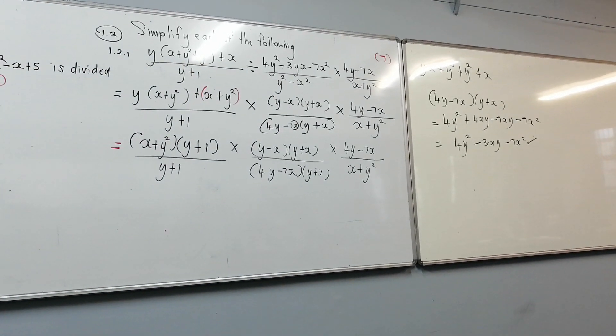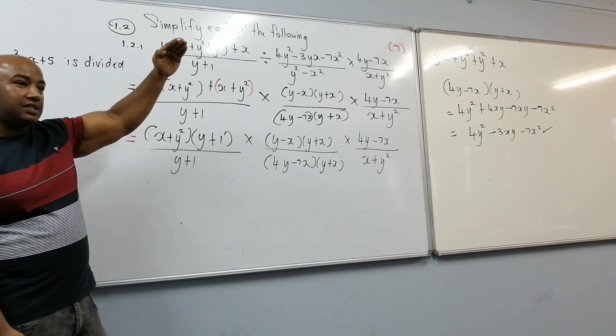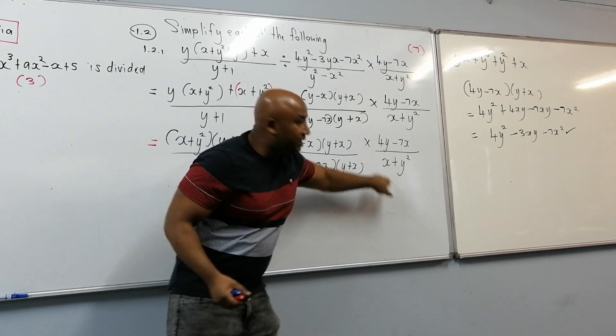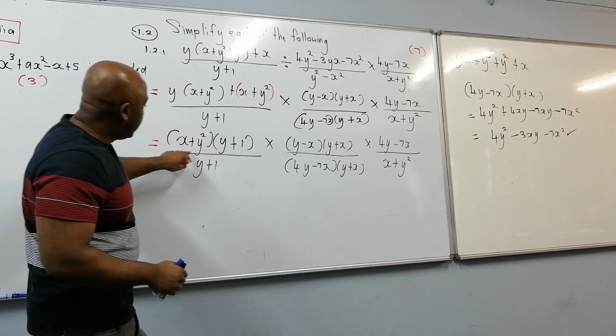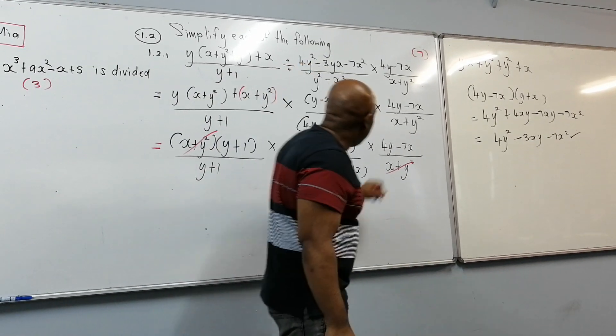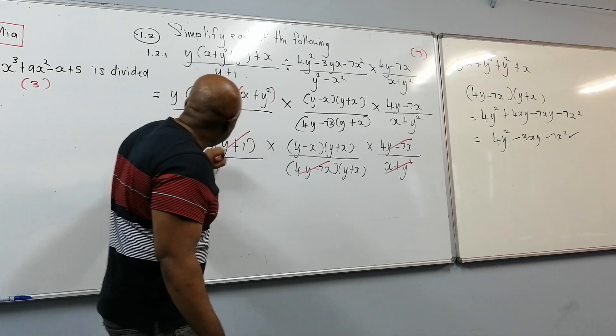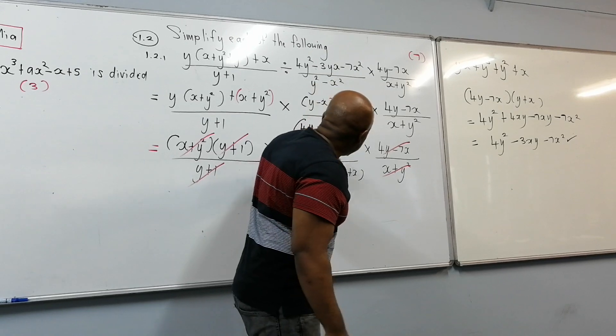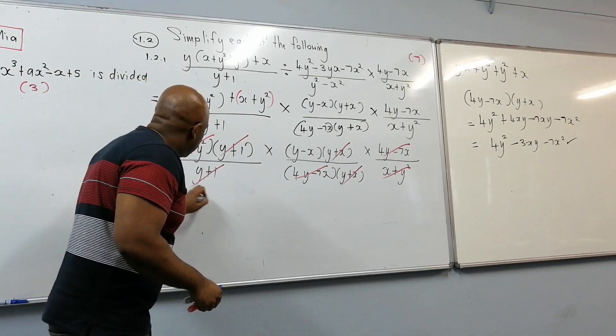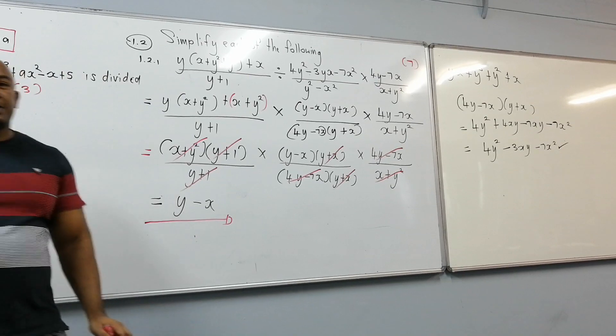Alright. So, now, there's nothing more to factorize. Let's start canceling. So, what are we looking for? We're looking for a pair, something that's identical. One must be in the numerator, one in the denominator. It doesn't have to be directly above because it's multiplication. If you see 1 here and 1 there, that is the pair. You can cancel. So, let's start canceling. x plus y squared with x plus y squared. What else? 4y minus 7x, 4y minus 7x. Oh, there's a pair right here. But this one, this is y plus 1, y plus 1. Y plus x, y plus x. And there's nothing else now. So, therefore, this is equal to y minus x. Alright. So, that was your second part question.